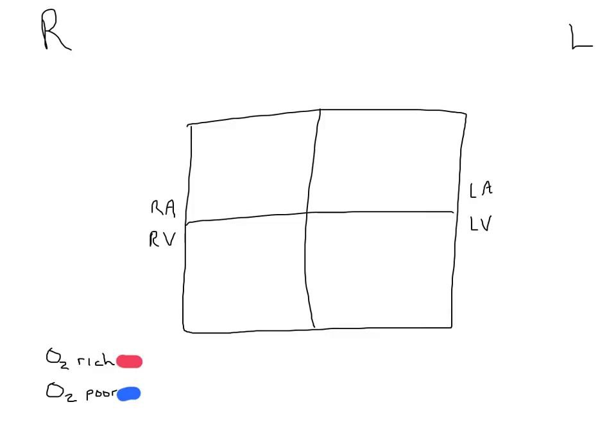Having the individual chambers identified, we can now look at the right side versus the left side of the heart. One side deals with oxygen-rich blood — traditionally shown in red in the cardiovascular system — and the right side handles oxygen-poor blood. The left-hand side of the heart handles oxygen-rich blood that has just been oxygenated at the lungs.